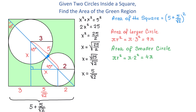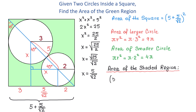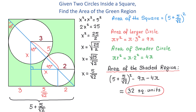To find the area of the shaded region, we take the area of the entire square and subtract the areas of each of the circles. So we write (5 plus 5 over square root of 2) all squared, then subtract 9 pi and 4 pi. Using a calculator to approximate this quantity, the area of the shaded region is approximately 32 square units. And now we have the problem completed.